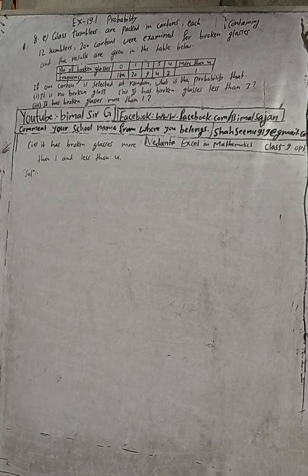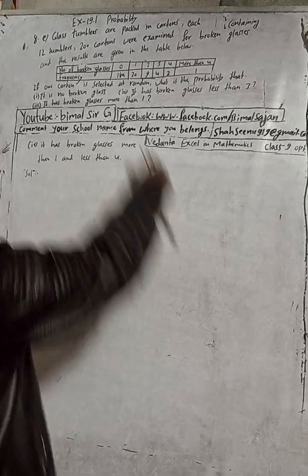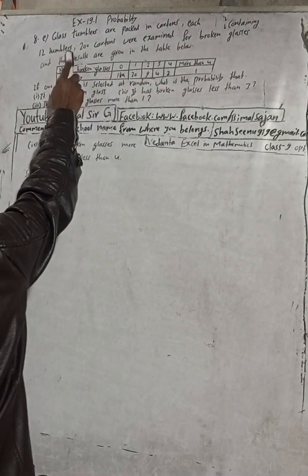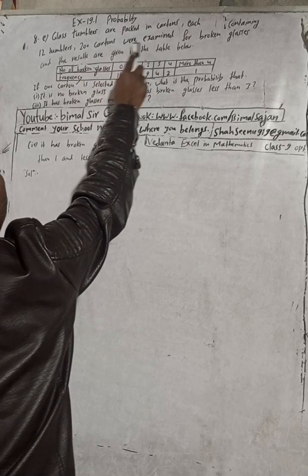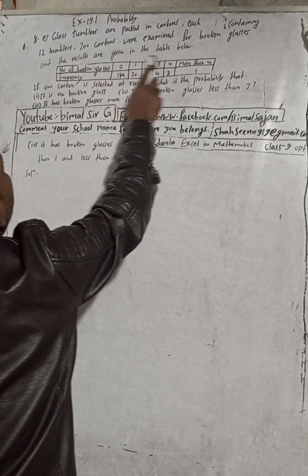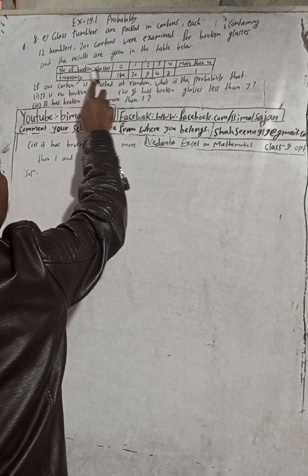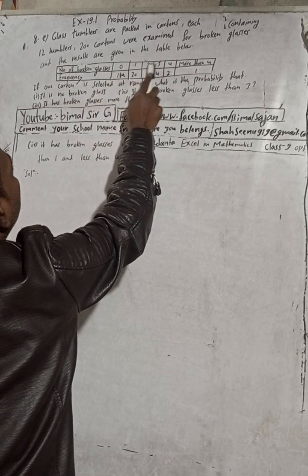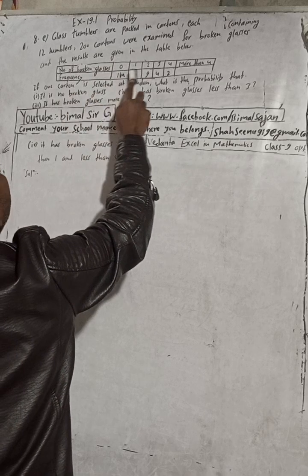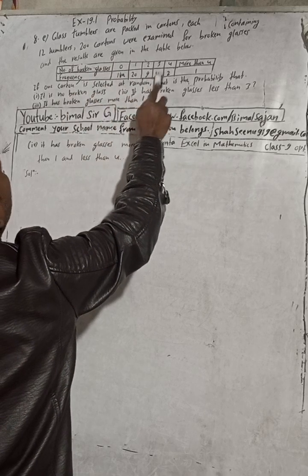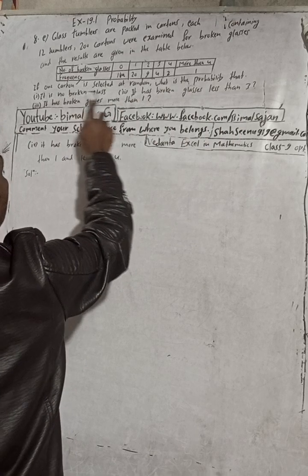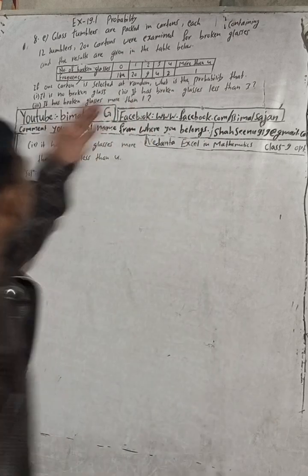The question is: glass tumblers are packed in cartons, each containing 12 tumblers. 200 cartons were examined for broken glasses and the results are given in a table. Number of broken glasses: 0, 1, 2, 3, 4, more than 4. Frequency: 164, 20, 9, 4, 2, 1. If one carton is selected at random, what is the probability that it has no broken glass?